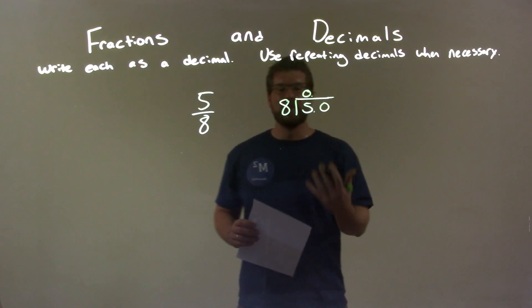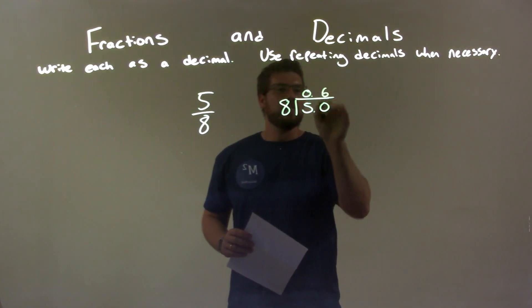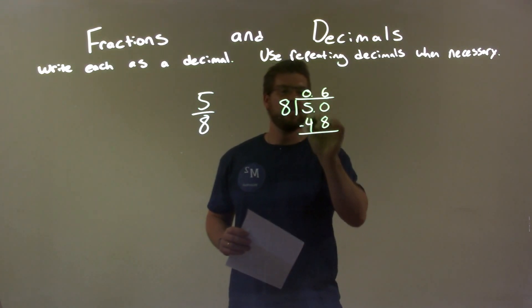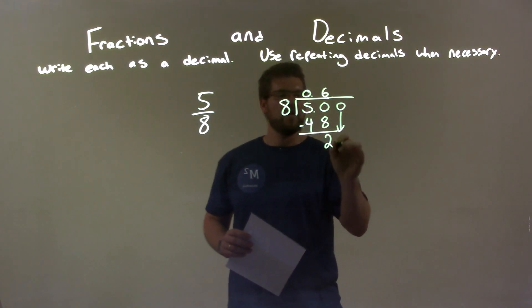Now, eight into 50. Well, eight times six is 48, so we have six right there. Six times eight is 48, and 50 minus 48 is two. We then have to add another zero and bring that down.